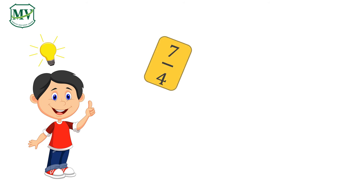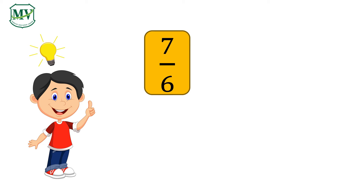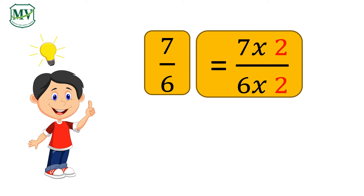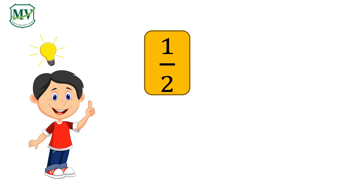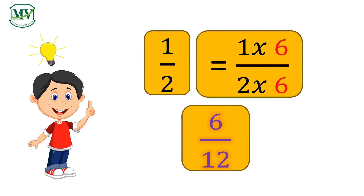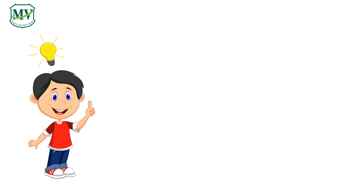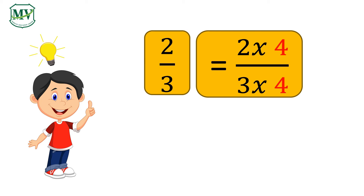For 7 quarters, let's multiply the numerator and denominator by 3 — it will become 21 twelfths. For 7 sixths, let's multiply the numerator and denominator by 2 — it will become 14 twelfths. For 1 half, let's multiply the numerator and denominator by 6 — it will become 6 twelfths. For 2 thirds, let's multiply the numerator and denominator by 4 — it will become 8 twelfths.